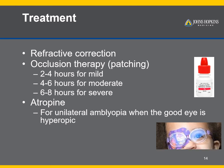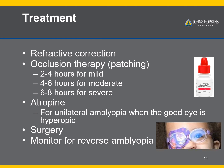Atropine can also be used as an alternative to patching by blurring the good eye. It is used when the good eye is farsighted, as atropine can prevent the eye from focusing on near objects, making the good eye blurry. Sometimes surgery is needed to correct the underlying cause, such as misalignment, cataracts, or ptosis.